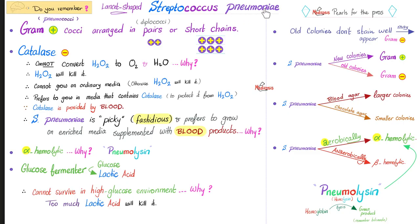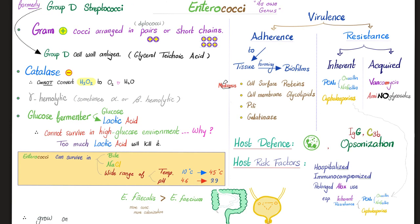Do you remember Streptococcus pneumoniae? It was gram-positive cocci arranged in pairs or short chains, catalase-negative. Similarly, Enterococci are gram-positive cocci arranged in pairs or short chains, also catalase-negative. Remember this, because one of the most important skills in lab diagnosis is knowing how to differentiate between streptococci and Enterococci.